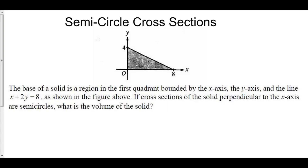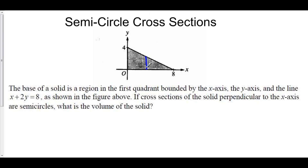The base of a solid is a region in the first quadrant bounded by the x-axis, the y-axis, and the line x plus 2y equals 8. If cross-sections of the solid perpendicular to the x-axis are semicircles, then what is the volume of the solid? Our semicircles are going to extend from the line x plus 2y equals 8 down to the x-axis.